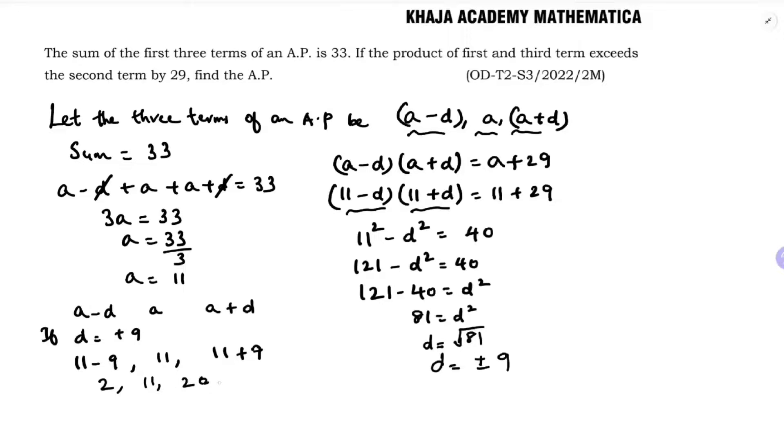If d is minus 9, then a minus d becomes a minus of minus 9, which is a plus 9, so 11 plus 9 is 20. a is 11, and a plus minus 9 is 11 minus 9, which is 2. So the series may be 20, 11, 2 and so on, or it will be 2, 11, 20 and so on.